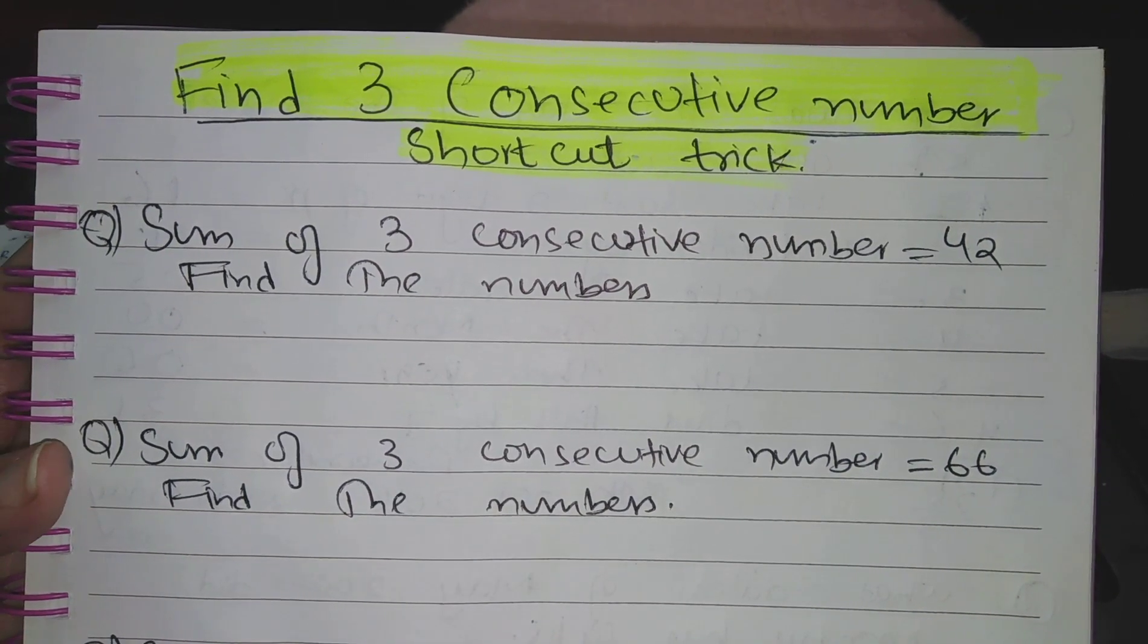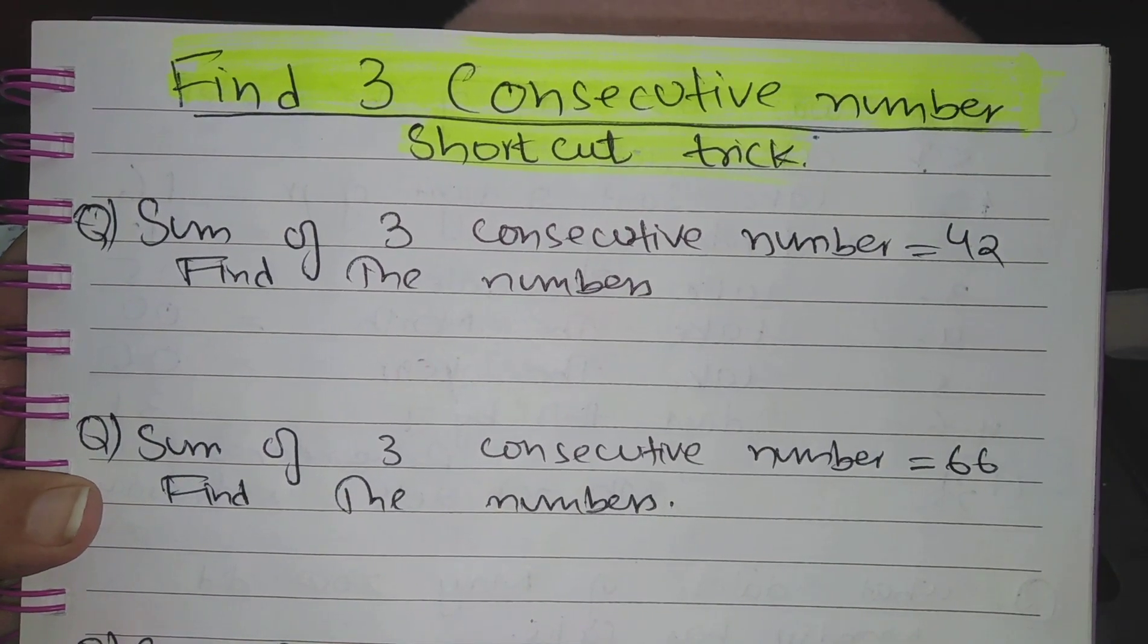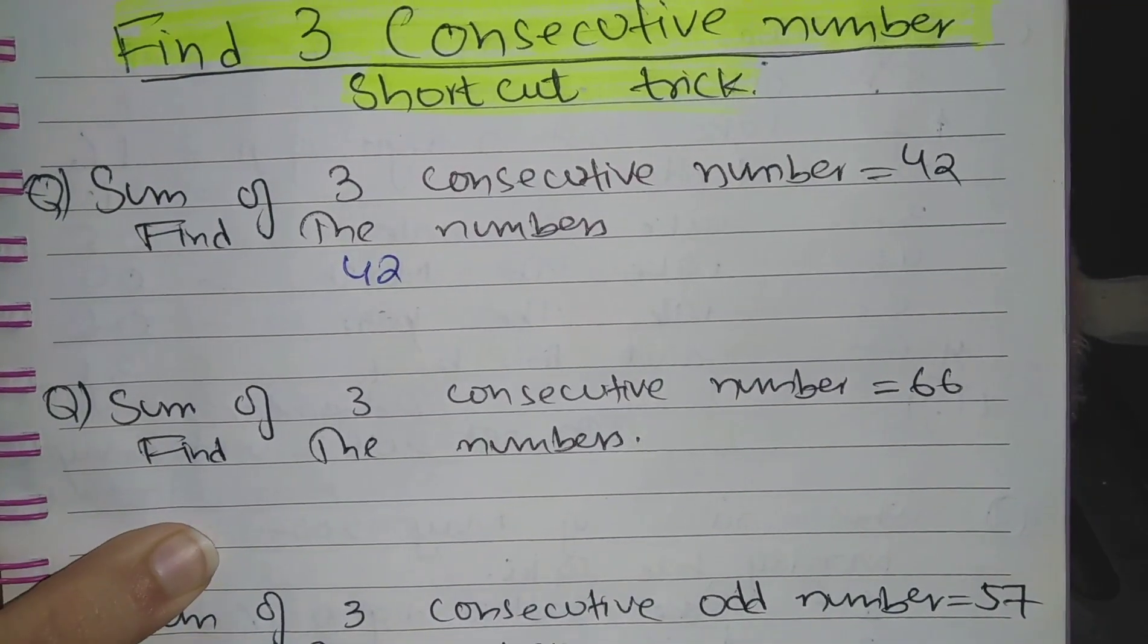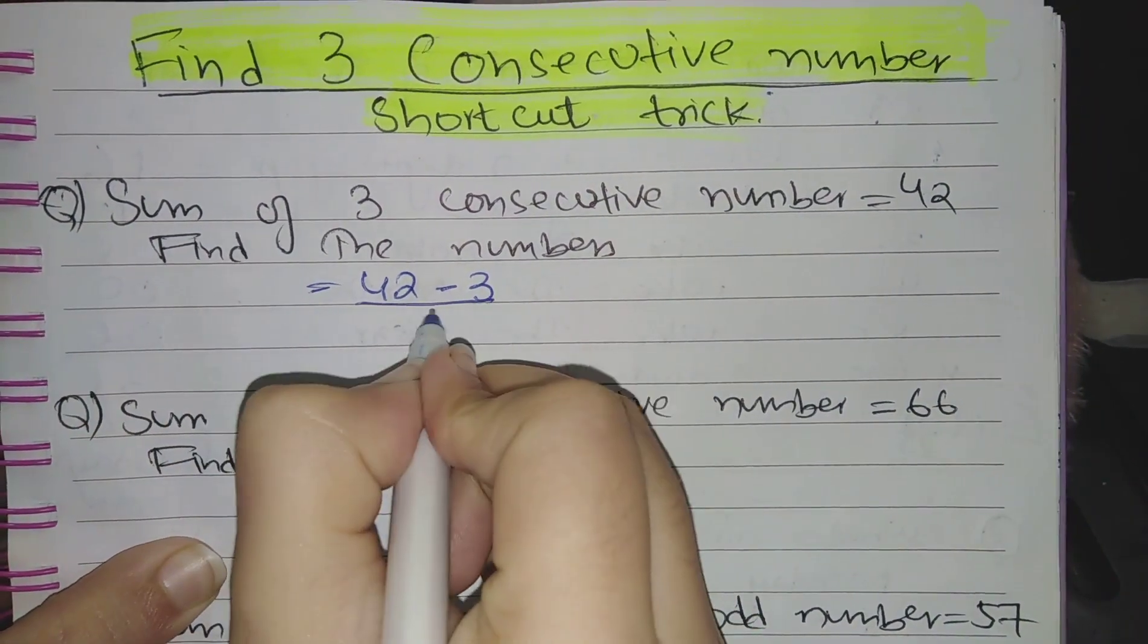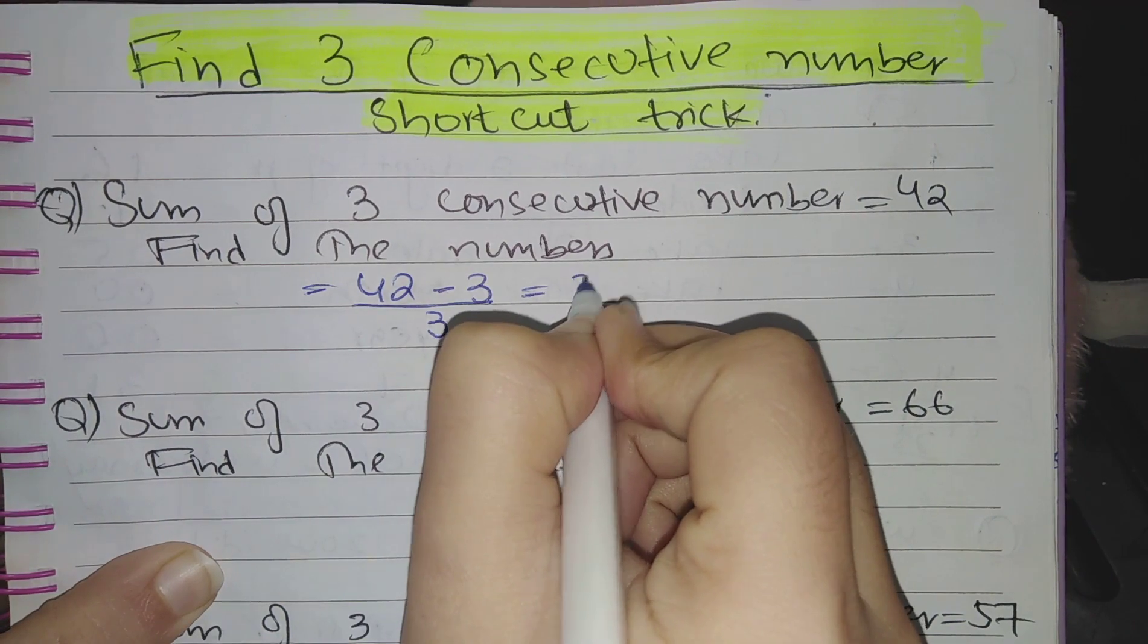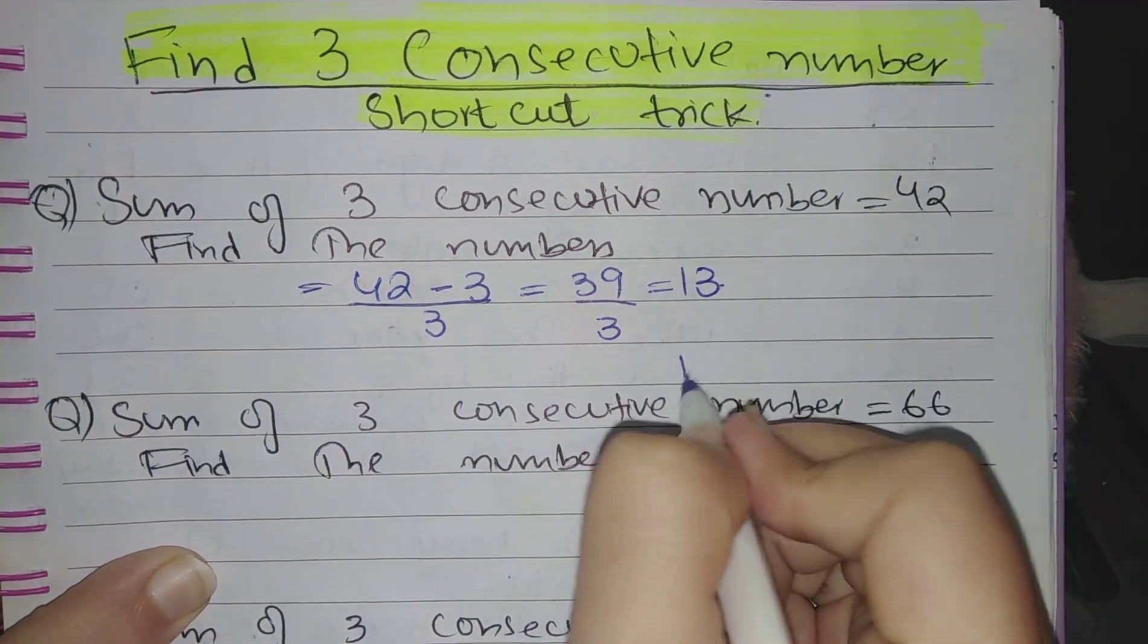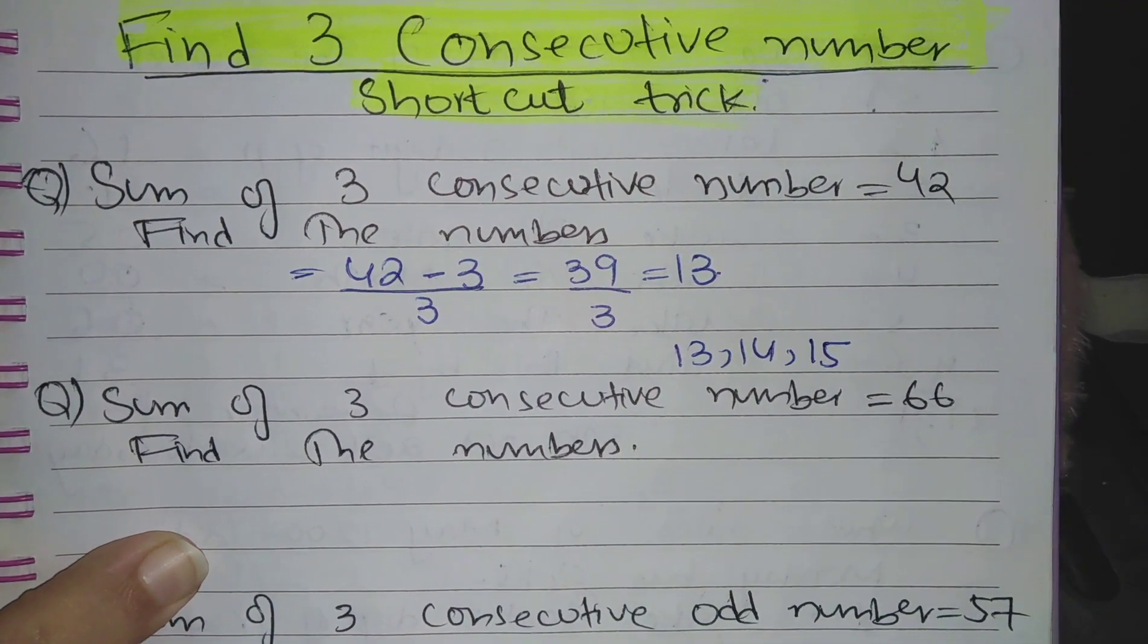The shortcut trick of this is just write down the sum of numbers which is given as 42. Subtract 3 from this number and divide it by 3. 42 minus 3 is 39 divided by 3 is 13. So first number is 13, next consecutive number will be 14, and next consecutive number will be 15.